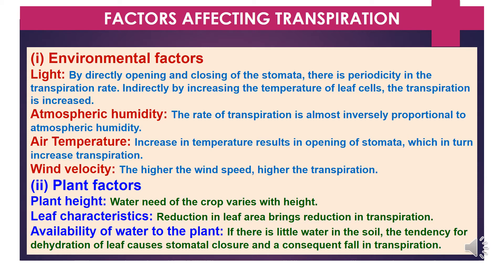Now we will discuss plant factors. The first is plant height — water needs of a crop vary with height. Regarding leaf characteristics, reduction in leaf area brings a reduction in transpiration. Regarding availability of water to the plant, if there is little water in the soil, the tendency for dehydration of leaf causes stomatal closure and a consequent fall in transpiration.